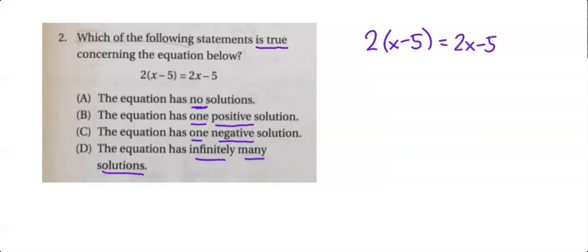So let's take a look at this 2 parentheses x minus 5 equals 2x minus 5. What that parentheses tells me is that I need to distribute the 2 to this expression so we have 2x minus and then 2 times 5 is 10 equals 2x minus 5. So we've got to subtract the 2x from both sides.